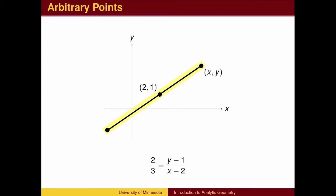A condition that defines a geometric object can be represented by an algebraic equation involving an arbitrary point (x, y). The set of all points that satisfy the equation is exactly the set that satisfies the geometric condition.